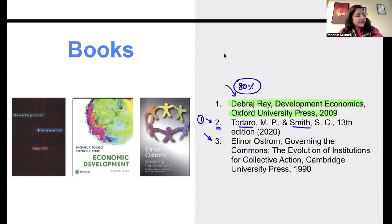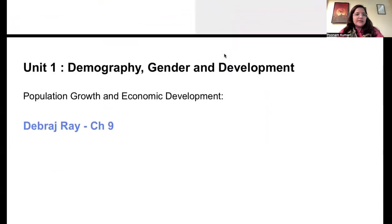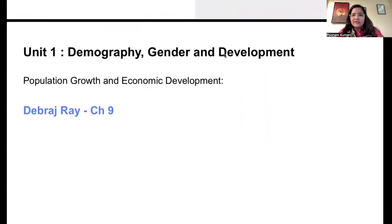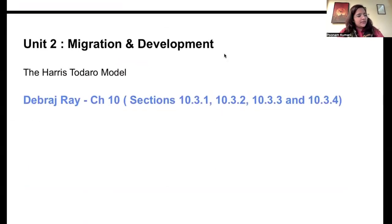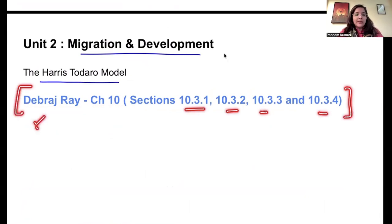So these will be your reference books. Let's talk about the unit wise bifurcation. Unit number one will be based on demography, gender and development. We'll be talking about issues based on that. Population, growth and economic development. Reference will be Debraj Ray chapter number nine, entire chapter number nine. Simple. Unit number two will be based on migration and development. Harris-Todaro model. This is the only model that we will be doing here. And the reference will be Debraj Ray chapter number 10. There are sections 10.3.1, 3.2, 3.3, 3.4. We only have to refer to these chapters from Debraj Ray book. So this will conclude your unit number two.